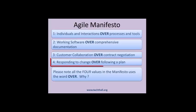Value 4: Responding to change over following a plan. The only thing that is certain when a project starts is change. An Agile team must be able to respond and adapt to regular change, rather than sticking to a plan created at the beginning of a project or iteration. Product requirements are prioritized at the beginning of each iteration, rather than the team agreeing to all requirements at the beginning of a project.